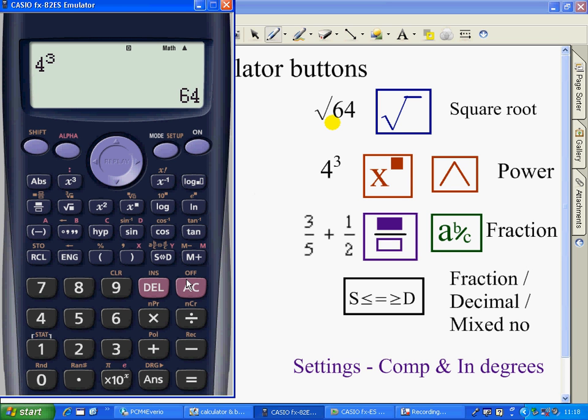All clear. It's good practice to press all clear at the end of each calculation, then you're not in danger of including your previous answer into your next one. Here, I have 3 fifths plus a half, so I'm going to be using this button.